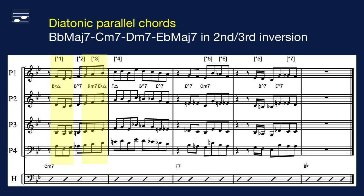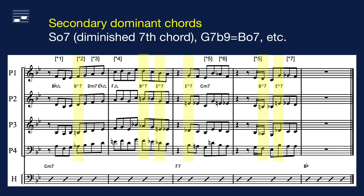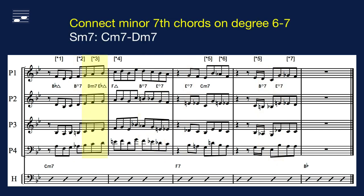The opening measure uses a set of diatonic parallel chords, as introduced in episode 7 from this series. These are written in close voicing and second or third inversion position. Next, there are many occurrences of the intermediate dominant chords from episode 1, here written as the equivalent diminished 7th chord voicing. In measure 1, there is also the connection of two minor 7th chords when the lead is stepwise moving through the 6th and 7th degrees, a case discussed in episode 5.